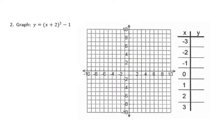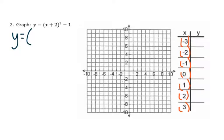This one here also has a power of 2, so it will be in that same shape. All we need to do, again, is plug in each of these pieces with parentheses, especially on the negatives. Taking a look at our equation, we have y equals, and then we're going to take our x and add 2, square that quantity, and then subtract 1. This is why taking the time to do our order of operations is very helpful.